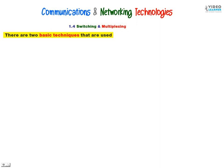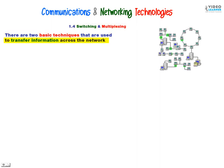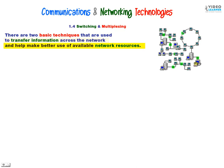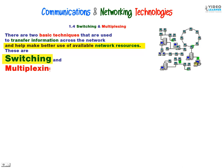There are two basic techniques that are used to transfer information or data across the network and help make better use of available networking resources. These are switching and multiplexing.